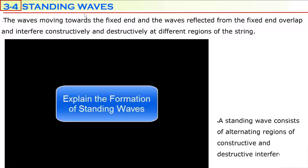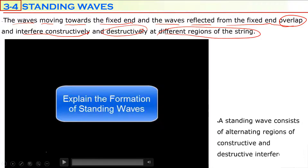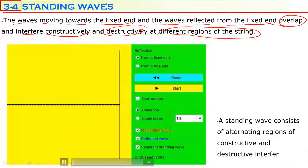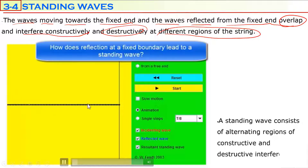Two waves move in opposite directions: waves moving toward the fixed end and waves reflected from the fixed end overlap and interfere constructively and destructively at different regions of the string. This simulation is a good example for standing waves. Waves moving on this string reflect at the fixed end. Let's have a look at what that looks like.